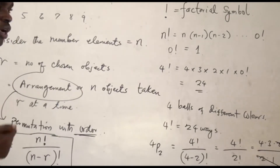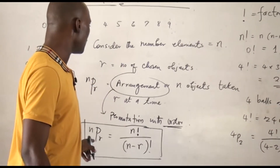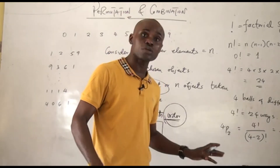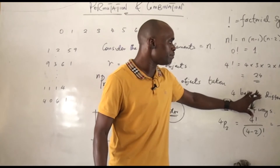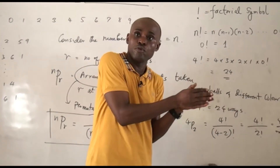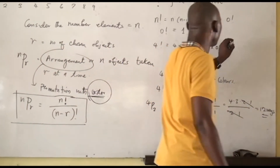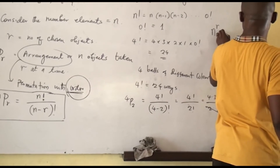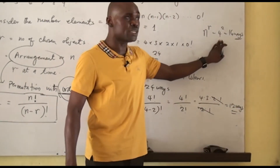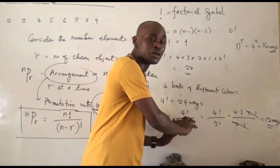Now if repetition is allowed — for example, you can have 2 blue balls — the calculation is different. When repetition is allowed, we use the formula n raised to the power of r. So this becomes 4 raised to the power of 2, which gives us 16 ways. If we are arranging 4 objects picking 2 at a time and repetition is allowed, that is 16 ways. But if repetition is not allowed, it is 12 ways.